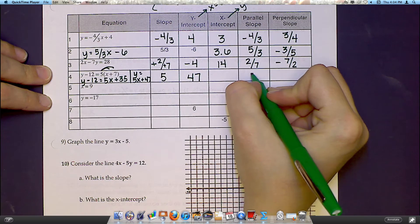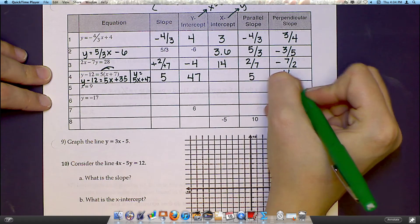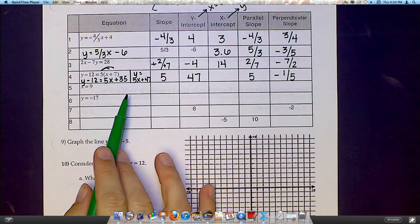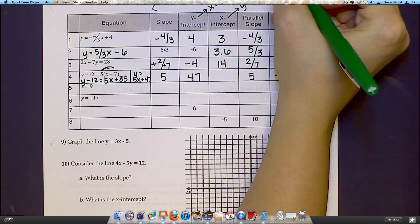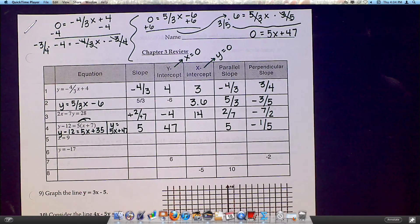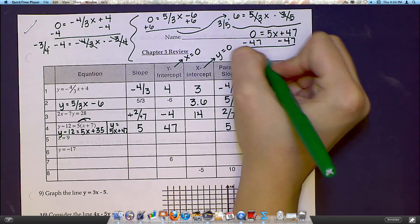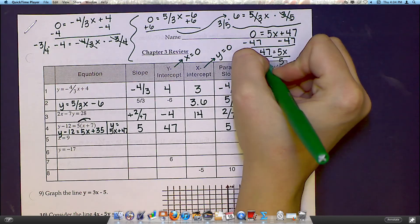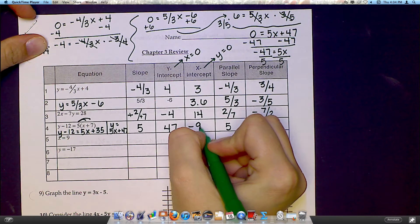My parallel slope would be 5. My perpendicular slope, if I thought of that as 5 over 1, would be negative 1 over 5. And to get my x-intercept, I'll have to plug a 0 in for y. So I would say 0 equals 5x plus 47. Let's subtract 47 from each side. So I get negative 47 equals 5x. And then divide by 5, divide by 5. You're going to end up with negative 9.4.